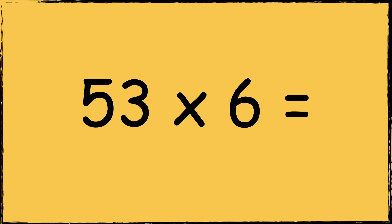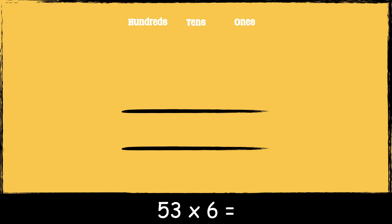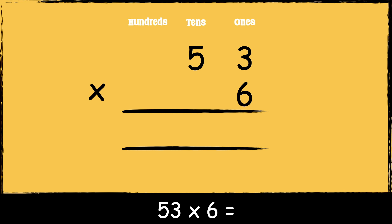Here's another calculation: fifty-three times six. First we make sure the numbers are lined up accurately. The number fifty-three has three ones and it has five tens. The number six has six ones. So now that we're set up, we're ready to multiply. First we're going to multiply six by three: six times three is eighteen. We carry the one below in the tens column as it represents one ten.